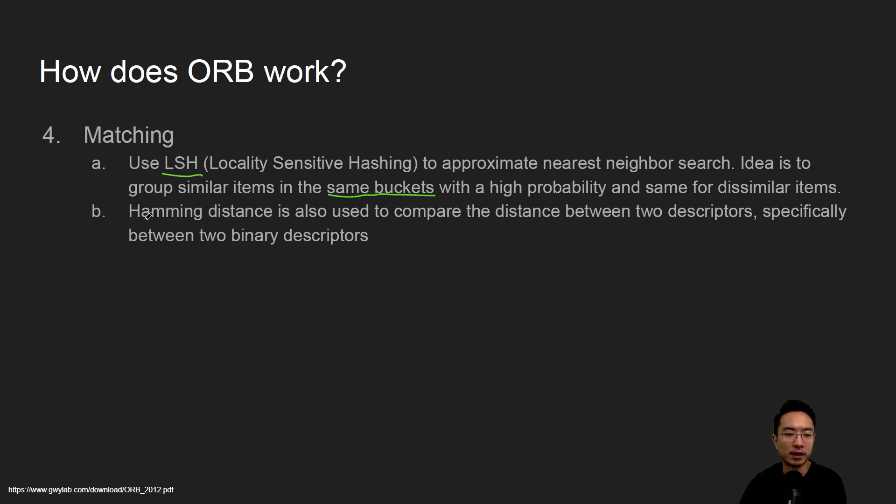And then after that, you will use what's called a hamming distance to compare the distance between the two descriptors. It's just a specific way of comparing distance for binary descriptors. We'll have a video on matching later on to go into more details. But that's the general idea.